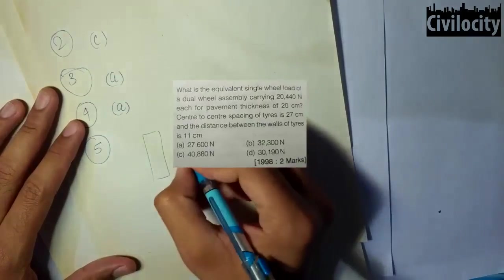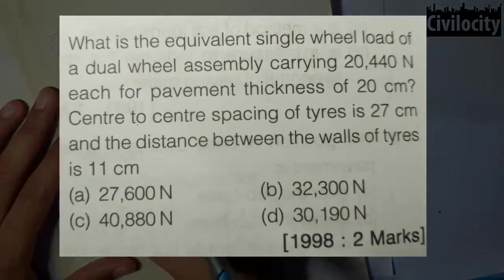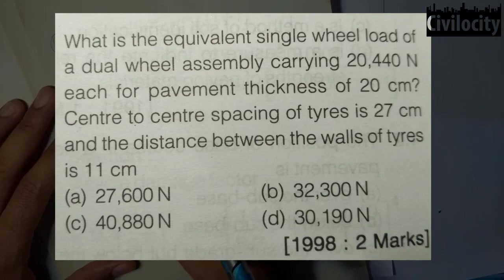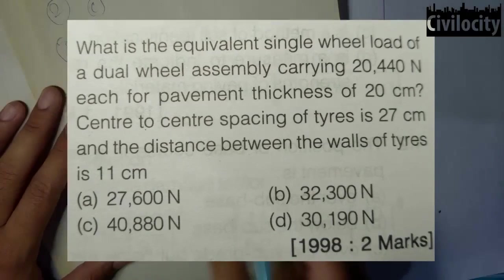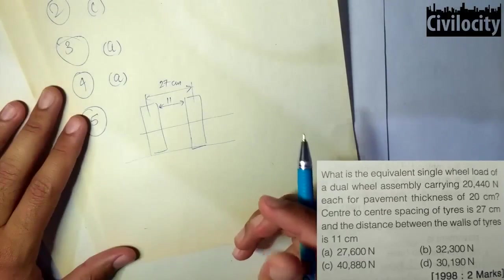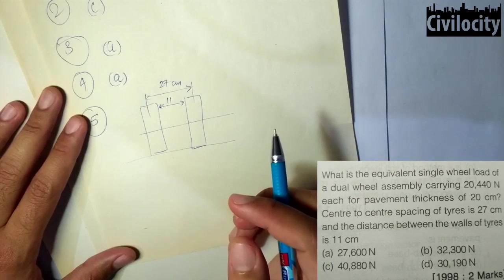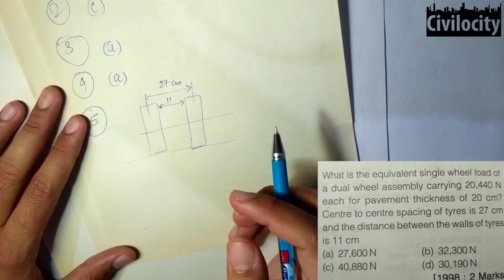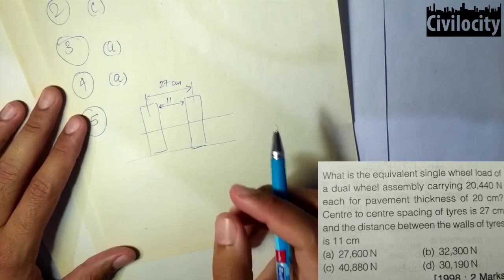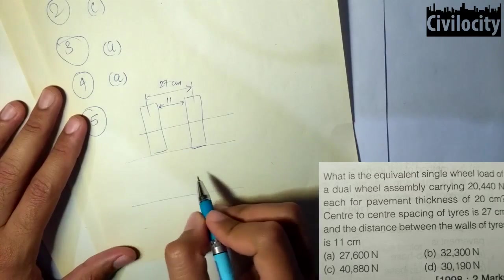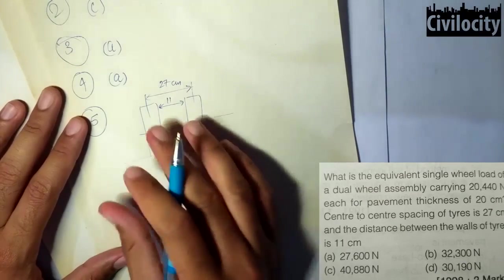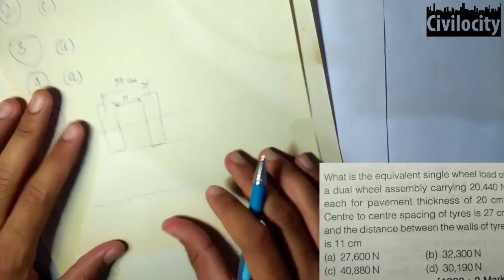Our fifth question: what is the equivalent single wheel load (ESWL) of a dual wheel assembly carrying 20,440 N each, for pavement thickness of 20 cm, center-to-center spacing of 27 cm, and wall distance of 11 cm? You find the ESWL by calculating the stress at 20 cm depth using a log graph.